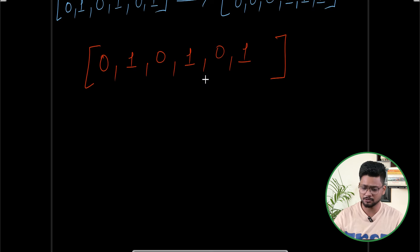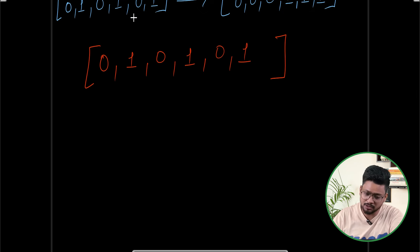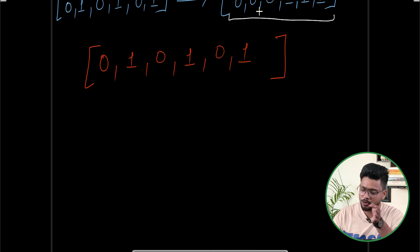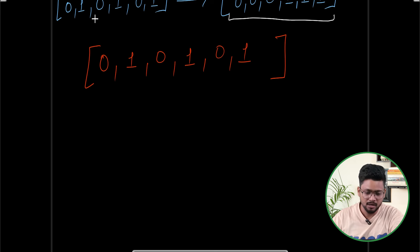Let's understand it by example and then find the approach. For example, they have given us an array like this: 0, 1, 0, 1, 0, 1. We have to segregate the array so that all the zeros come at the left side and all the ones come at the right side of the array.